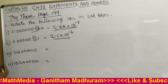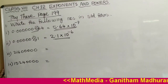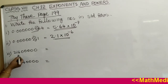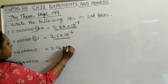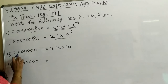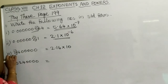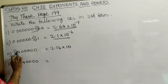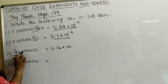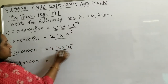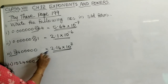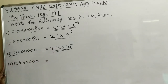Now look at this number — it is a whole number. After the first digit you can put the decimal point, then write the non-zero digits and give the power of 10. Remove the first digit and count the remaining digits: 2, 4, 6, 7 — there are 7 digits. So we write 10 raised to 7. The standard form is 2.16 into 10 raised to 7.